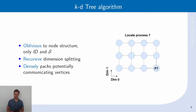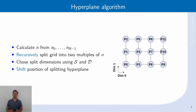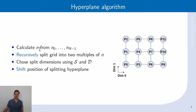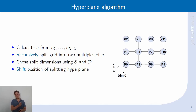This algorithm works very well because it is oblivious to the number of cores, but it can create jagged partitions. To address that problem, we introduce the hyperplane algorithm. It works very similarly to the KD tree, but takes into account the number of cores per compute node. It calculates one input number from the possibly different number of cores per compute node, which is then used to recursively split the grid into two parts, both having a size which is a multiple of this input number n. The dimension on which we split is chosen according to the stencil and the dimension sizes.